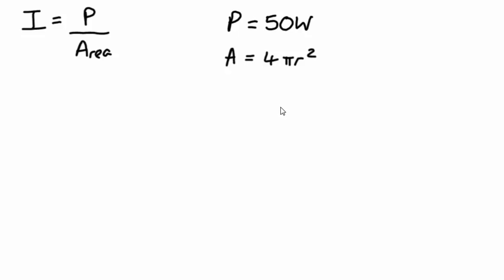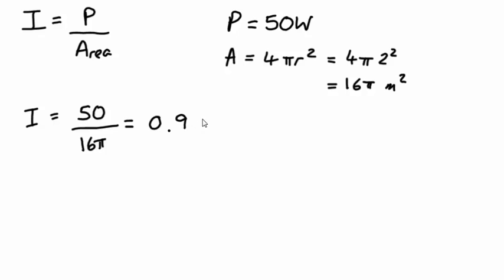Let's begin by working out the intensity 2 meters away from the light bulb. This would be 4 pi times 2 squared, so that would be 16 pi. Our intensity I equals 50 watts divided by our surface area, which we've worked out to be 16 multiplied by pi, which is equal to 0.99 watts per square meter.